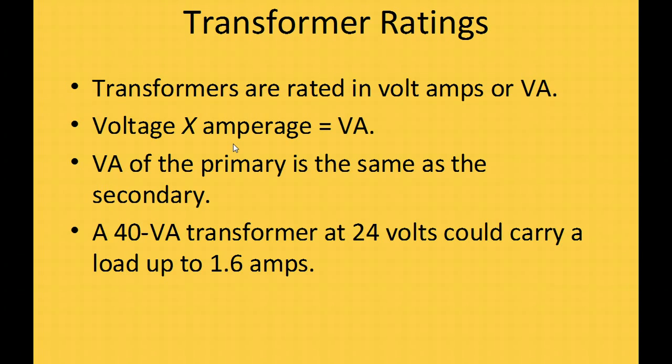The way you make sure you don't overload your transformer is most control devices in the HVAC system will have a VA rating. A 40 VA transformer can only handle 40 VA worth of load before it burns out. That's the equivalent of 1.6 amps, which you get by dividing 40 by 24.